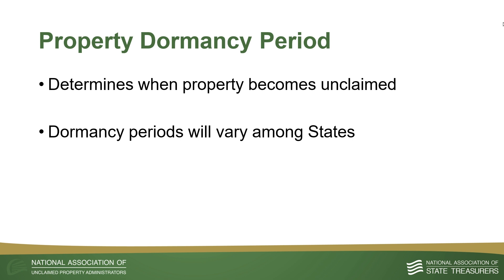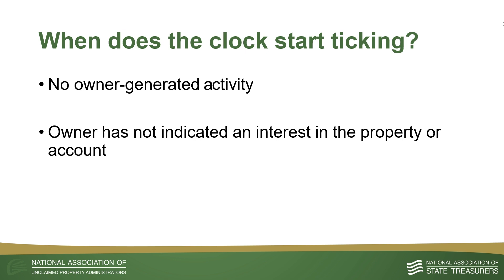As you may be aware, dormancy periods differ by state as well as by property type. Dormancy is the time that passes without owner-generated activity or written contact from the apparent owner. Intangible properties such as checks and bank accounts, as well as some tangible properties like safe deposit contents, become unclaimed after a specified period of inactivity and when reasonable efforts to re-establish contact with the owner are unsuccessful.